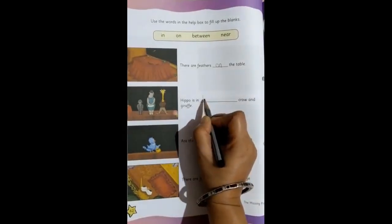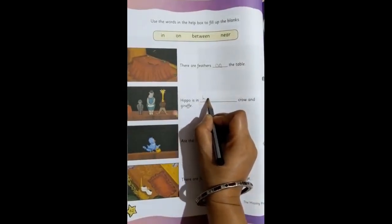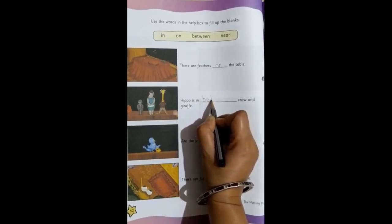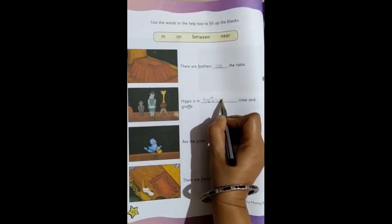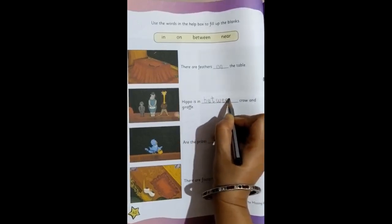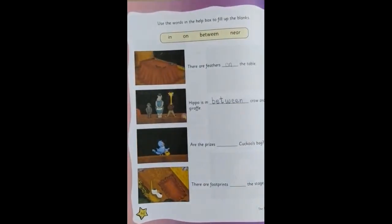See, we can see the spelling also. B, E, T, W, double E, N. In between. Hippo is in between crow and giraffe.